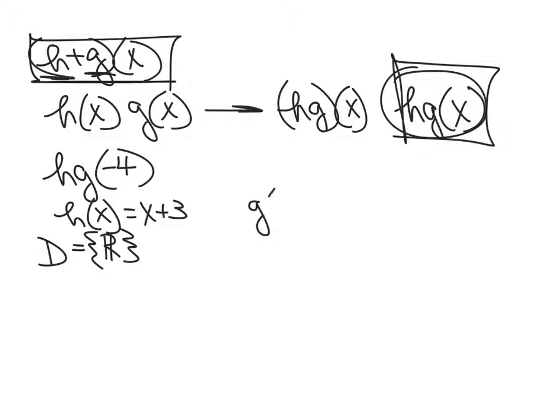And then they're giving me g of x. For g of x, they're telling me that I've got x squared minus 6, and that the domain of g is going to be negative integers. So that's the information they give me.